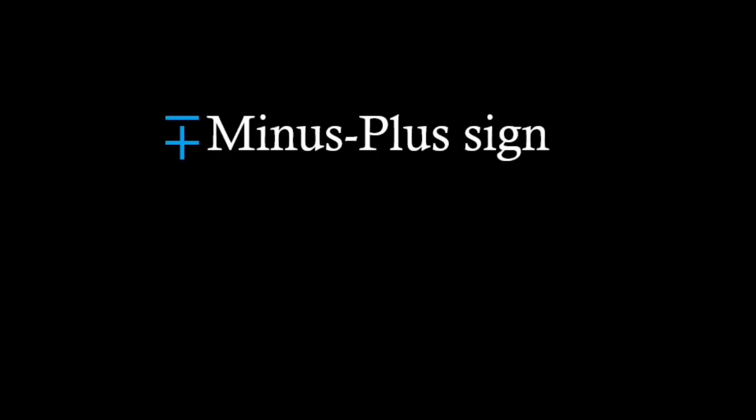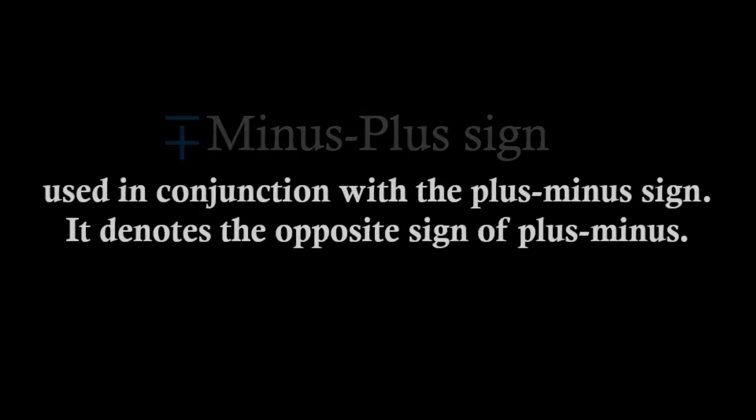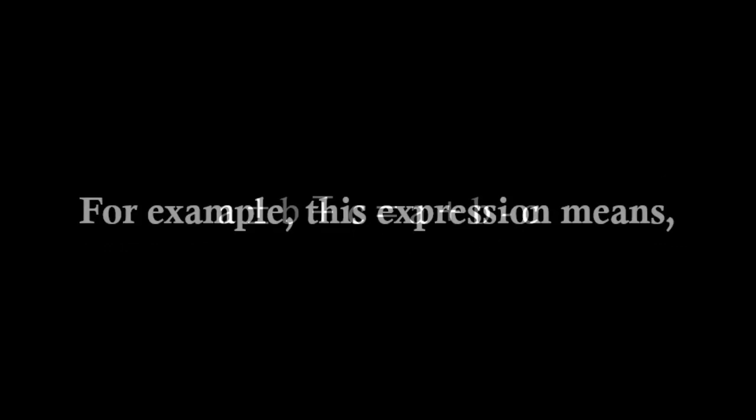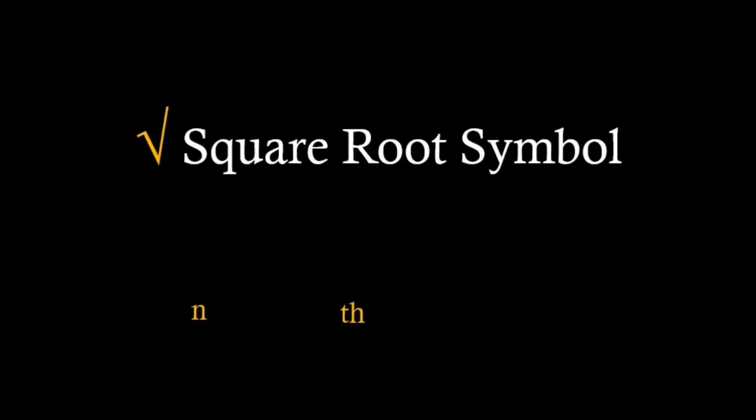Plus minus denotes either plus or minus. Sometimes it can also be used to denote a range of values. Its counterpart minus plus sign is used in conjunction with the plus minus sign. It denotes the opposite sign of plus minus. For example, this expression means that it's either a plus b minus c or a minus b plus c. Both signs can't be the same.